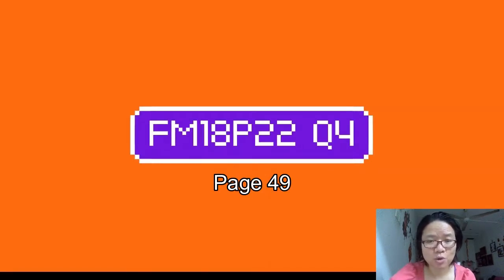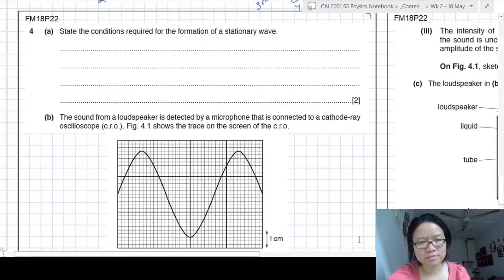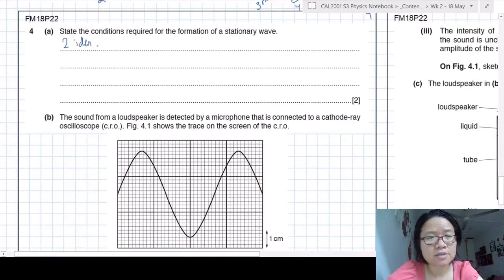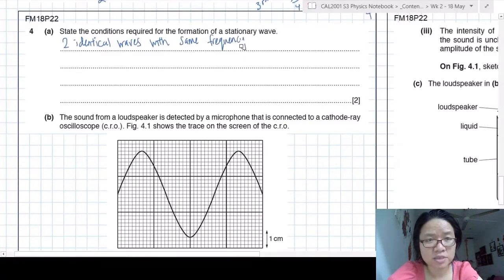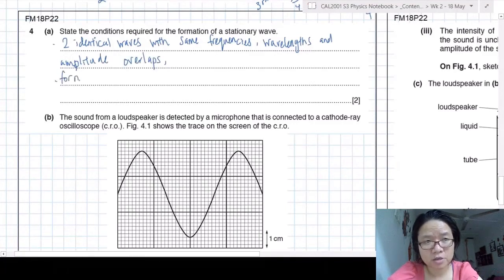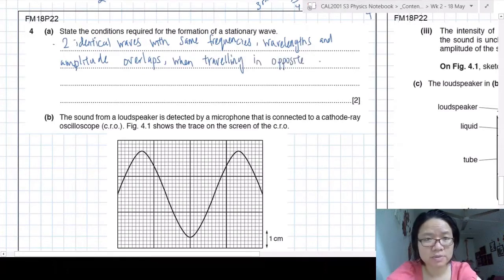Now we're going to look at another question from March 18. So we're going to start off easy. State the condition required for formation of stationary wave. You have two identical wave source with the same frequency, same wavelength, same amplitude. Key points must be there. So they overlap. And you also should mention that they are traveling in opposite direction. So overlaps while traveling in opposite direction. That will do.